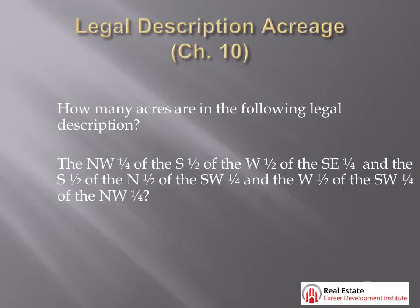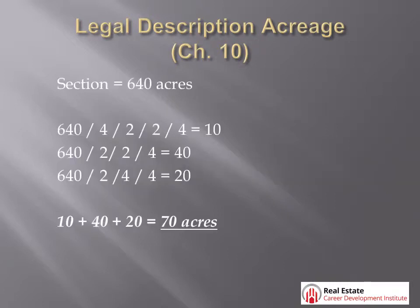Sound difficult? It really isn't. A section contains 640 acres. You take 640 acres and divide it by the denominator in each legal description. Every time you have the word 'and', a new legal description starts.